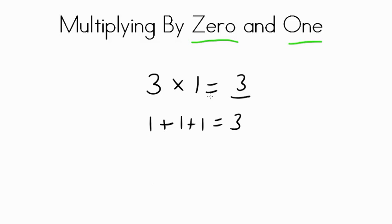When you're multiplying by 1, the answer is always the number you're multiplying 1 with. So for example, if we multiplied 4 times 1, that's 1 plus 1 plus 1 plus 1, and you get 4.